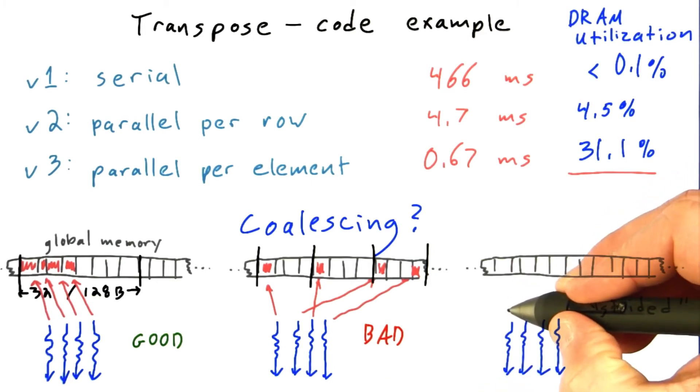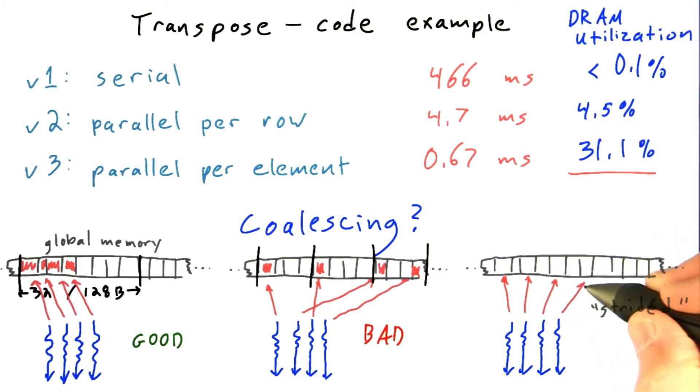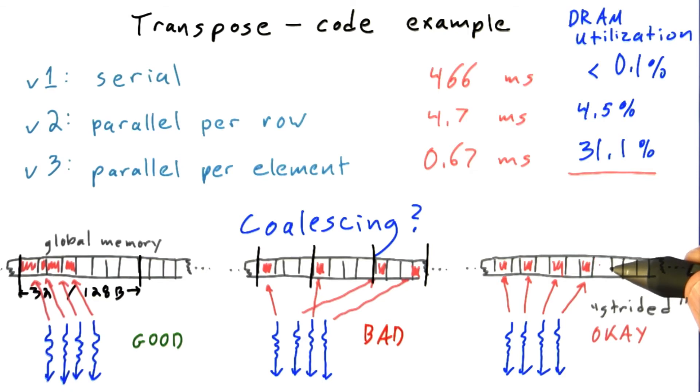So a much more common access pattern is what's called strided. And this is where threads access a location memory that's a function of their thread ID times some stride. So for example, thread 0 might access location 0, thread 1 location 2, thread 2 location 4, thread 3 location 6, and so on. In that case, that'd be a stride of 2 because there's 2 elements between thread accesses. And strided accesses range from OK, like in this case, where with a stride of 2 elements, I'm really only doubling the number of memory transactions, so I'm sort of halving the quality of my coalescing.